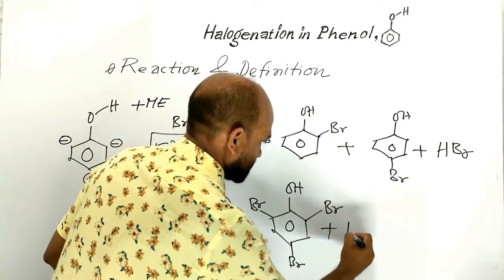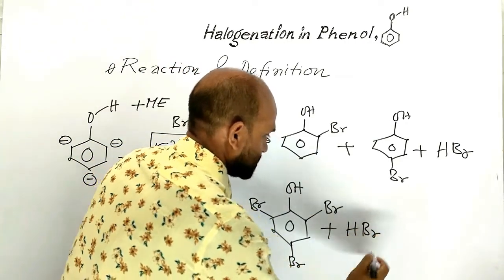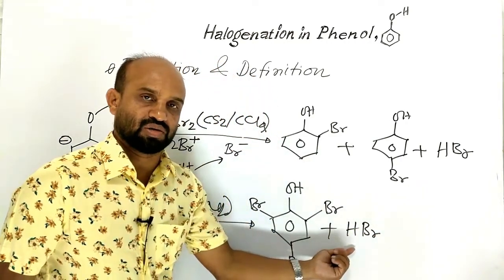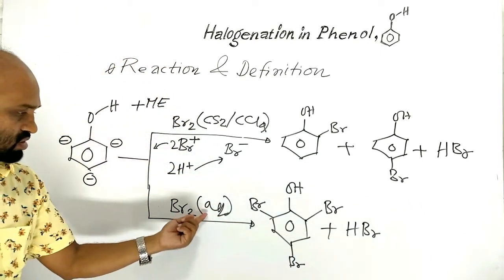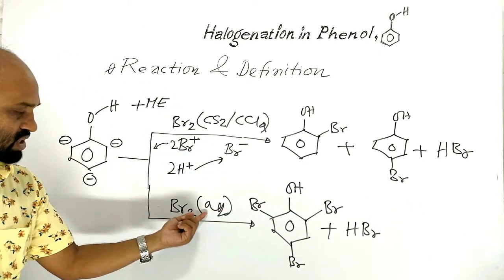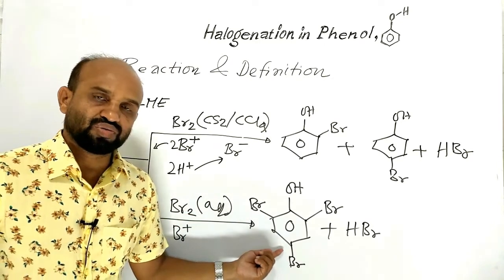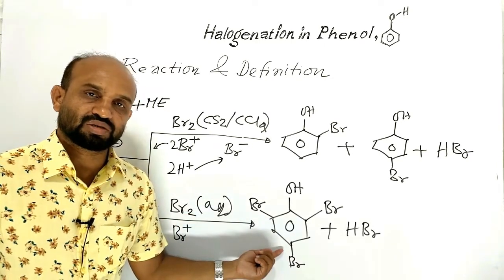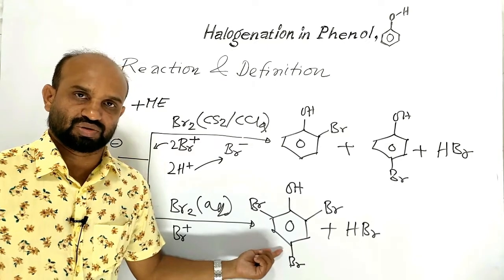Hydrogen bromide is formed as a by-product. Because of the presence of water, 2,4,6-tribromophenol is produced instead of mono-substituted products.